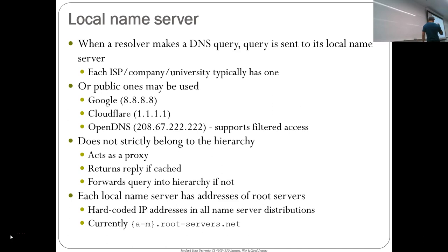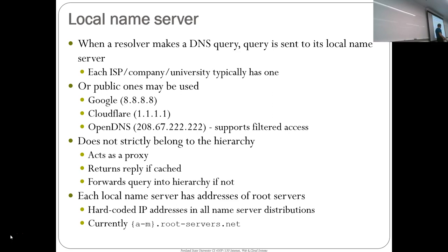Each local DNS server has to know how to query the hierarchy. There are 13 hard-coded IP addresses for all of the root name servers. The root is at the top of the hierarchy — if the local name server doesn't know a name resolution, it always starts at the root, queries it, and then goes down from there to find the actual mapping. These are a through m dot root-servers.net, and this is part of your lab where you dig around the DNS hierarchy.